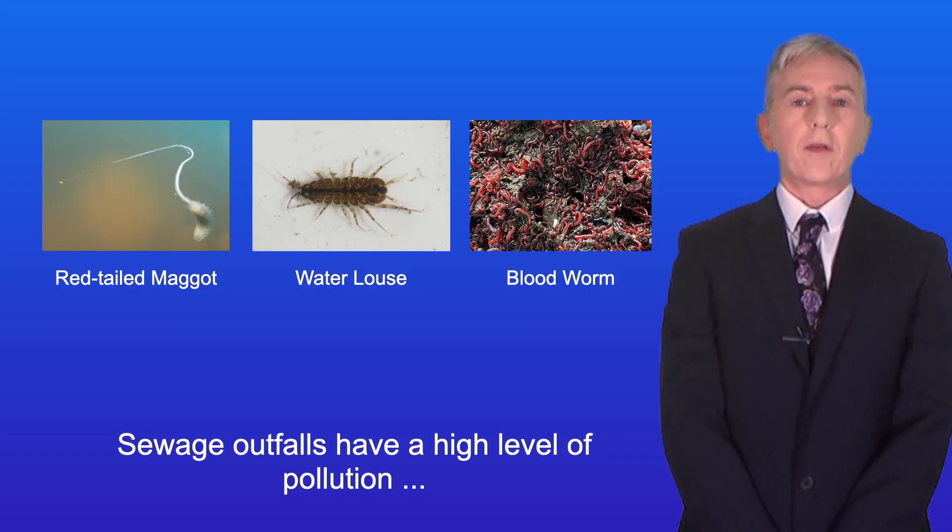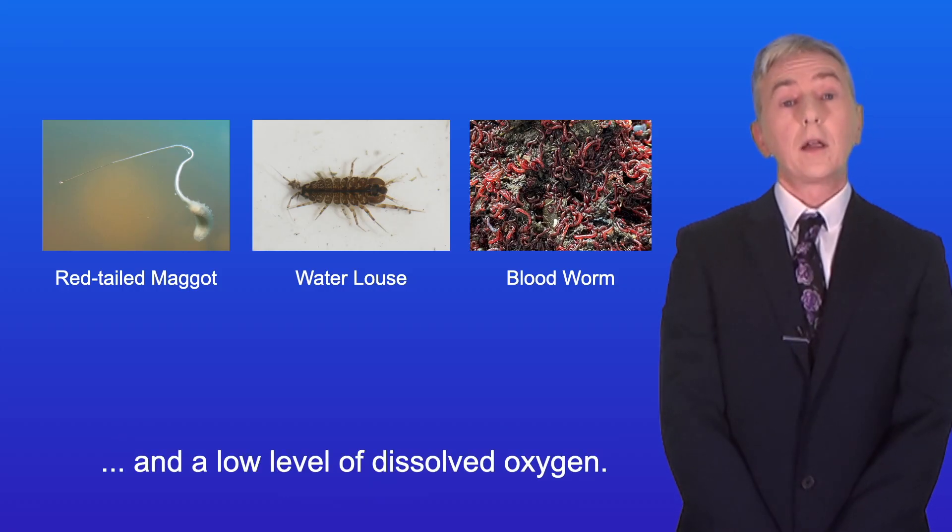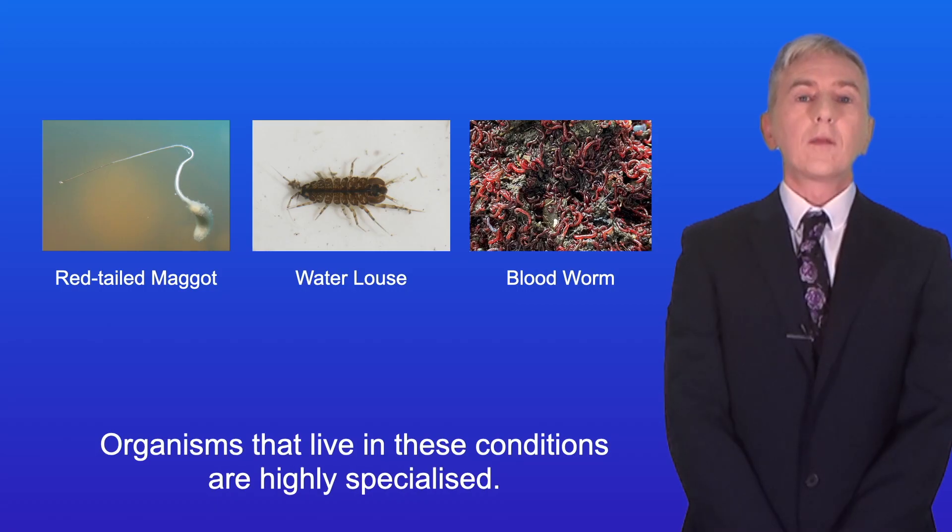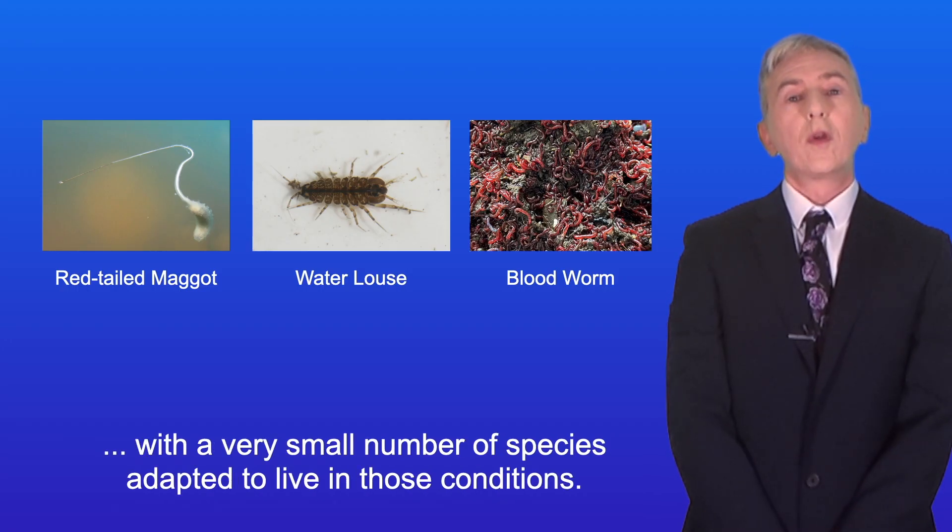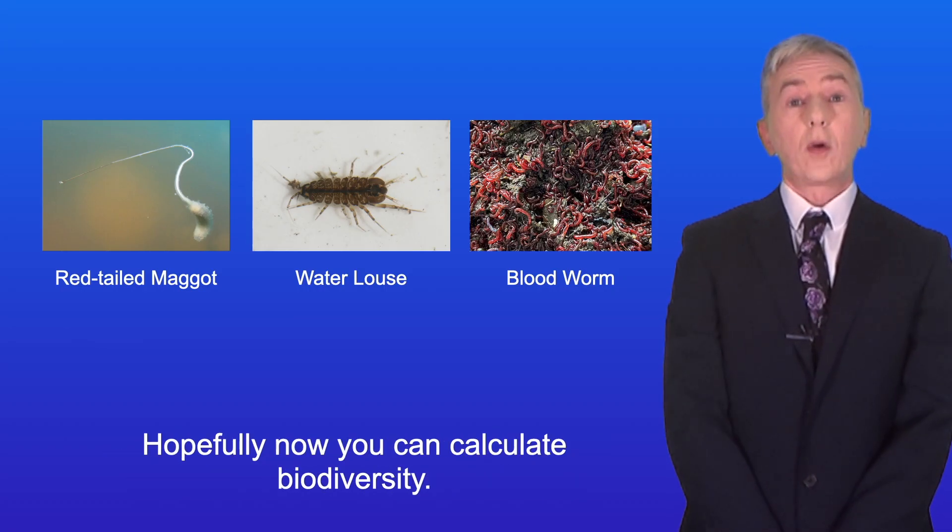Sewage outfalls have a high level of pollution and a low level of dissolved oxygen. Organisms that live in these conditions are highly specialized. So areas that are heavily polluted tend to have a low biodiversity, with a very small number of species adapted to live in those conditions. Okay, so hopefully now you can calculate biodiversity.